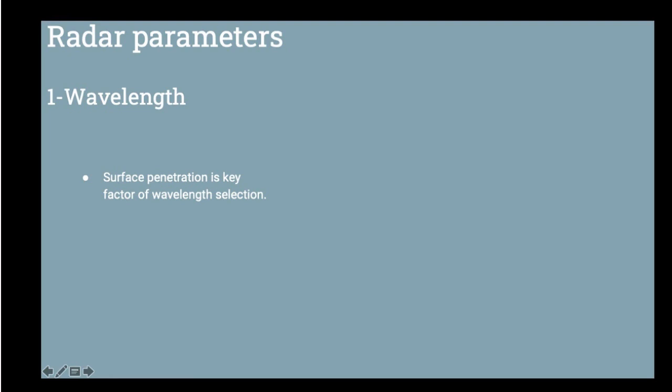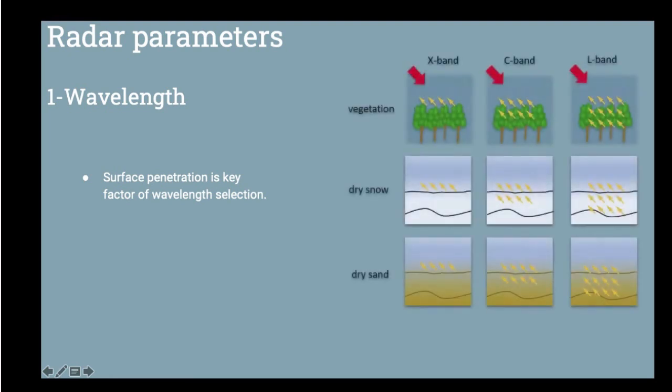Now remember two things. First, the longer wavelength has more penetration. However, if the wavelength is small, there will be less penetration. For example, if we're using L-band and we are experiencing less scatter back, that means we will see a dark surface.